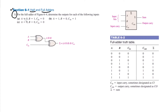The question is for the full adder of figure 6.4. This is figure 6.4 — determine the outputs for each of the following inputs. For part A, B, and C we have different combinations for A, B, and C in.